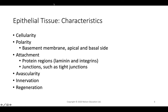Epithelial tissue is avascular — it has no blood supply — so it accesses nutrients from the blood supply just under the basal membrane. Cells further from the vascular source eventually die off, like skin cells. The bottom layer regenerates as the top layer sloughs off. Epithelial tissue is also highly innervated, so you can feel pain even without blood supply there.